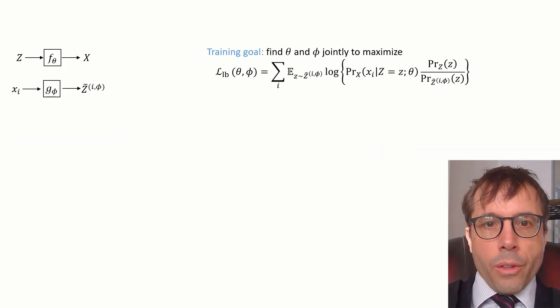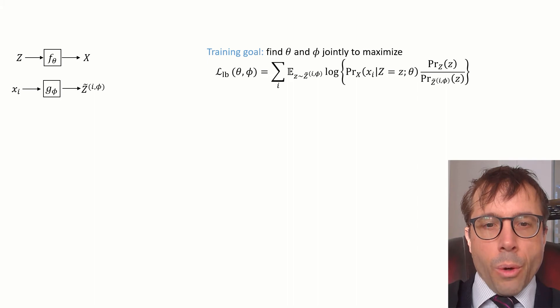Okay, so this gives us the training goal for an autoencoder. The goal is to find θ and φ jointly to maximize this log likelihood lower bound. All that's left is to figure out how to actually do the maximization. And this is where the third trick comes in.